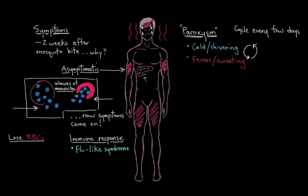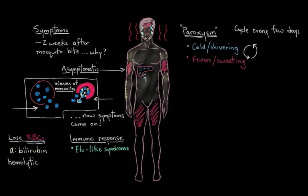Red blood cells contain proteins called bilirubin. When red blood cells are destroyed and bilirubin leaks out into our bloodstream, it tends to deposit under our skin, giving it a yellowish tinge. This is known as hemolytic jaundice — jaundice referring to the yellowing of the skin, and hemolytic referring to the bursting of red blood cells.